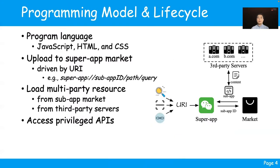Now let me introduce a standard programming model and the life cycle of a sub-app. Like a tiny web application, sub-apps are often written in JavaScript, HTML, and CSS. Third-party developers need to upload their sub-app to the market on the host super app, and the sub-app can be found through a universal resource identifier. The URI specifies the super app protocol and a sub-app ID. An end user can either search in the market, scan a QR code, or click on a deep link containing such a URI, which will be handed over to the super app. The super app can then find and load the corresponding sub-app into its WebView instance. Additionally, sub-apps can also load other web content from third-party servers, such as advertisements or remote backups.